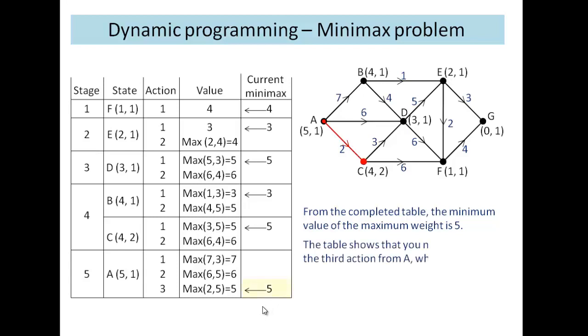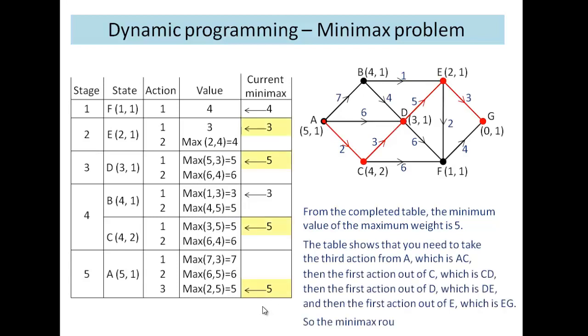So we explain that here. And you can see that this gives us the minimax route of A, C, D, E, G, with a value of 5.